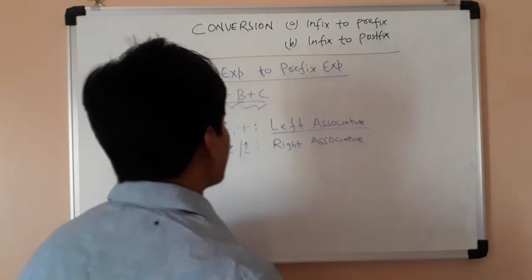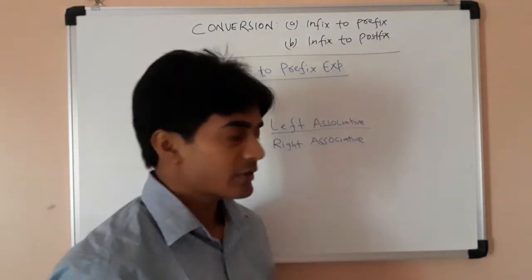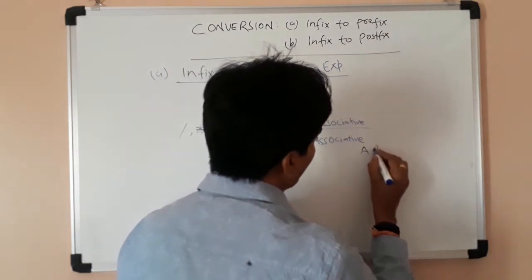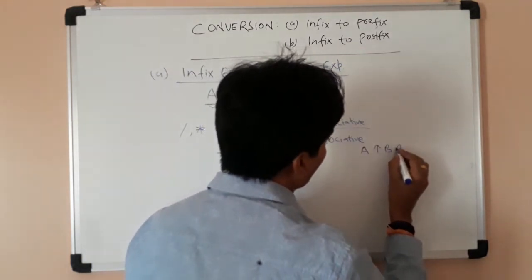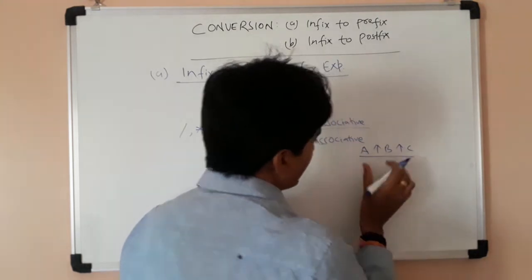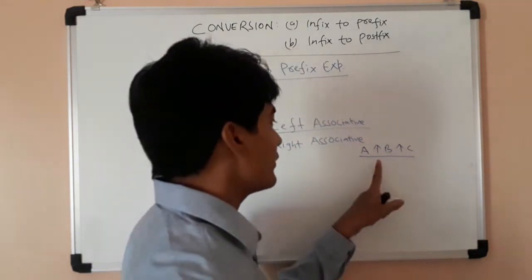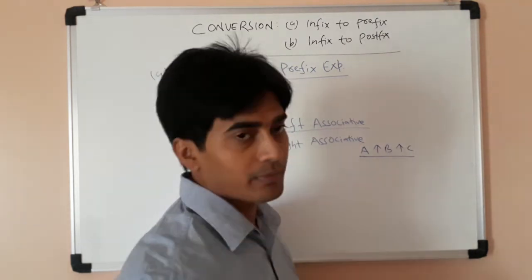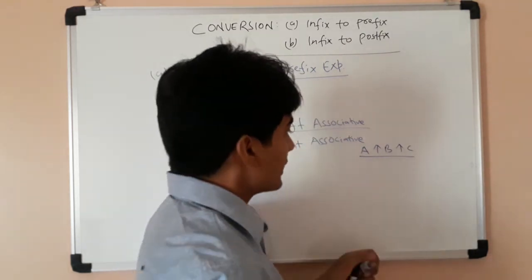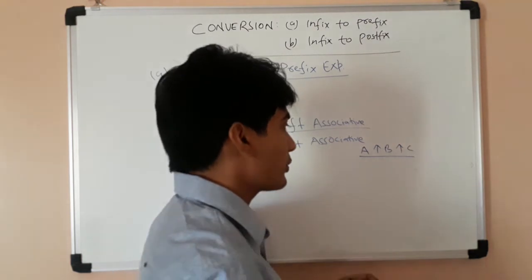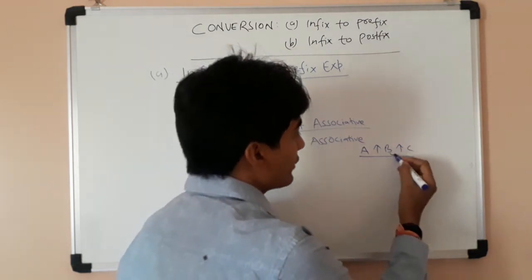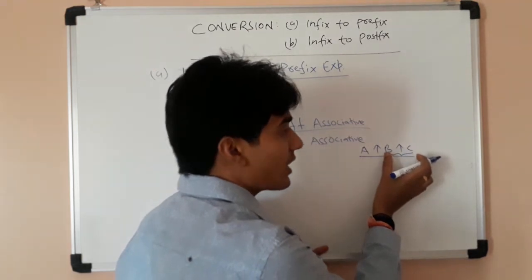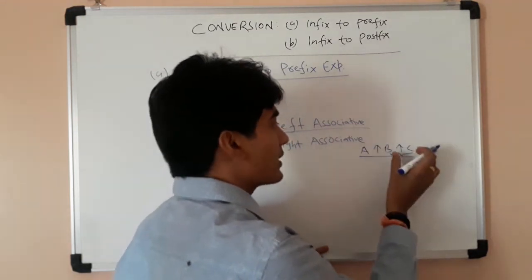What does right associative mean? Suppose we have a power b power c. Here we have two operators of the same nature, but the operator is power, which is right associative. So calculation will always start from the right side — first we evaluate b power c, then a power whatever result we got.